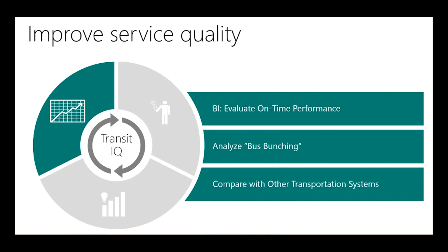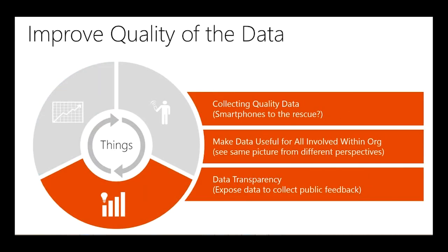Regarding quality of the data: public transit agencies sometimes feel abandoned. They have buses and can look at reports, but they usually cannot do anything about data collection — it's done by some black box. But if data is collected incorrectly and you have gaps and anomalies, those things are fixable. Every agency we dealt with had these problems. We think we found the solution: we can collect information using smartphones placed on the bus.